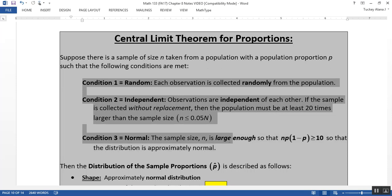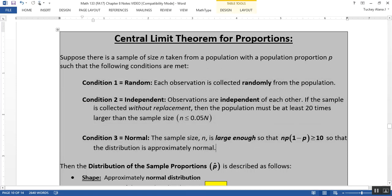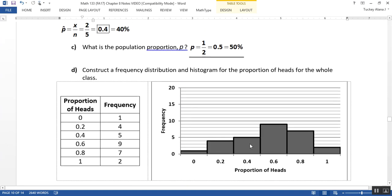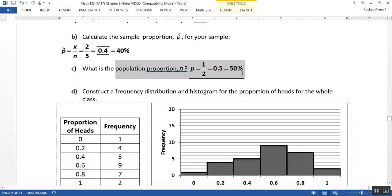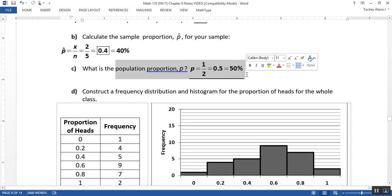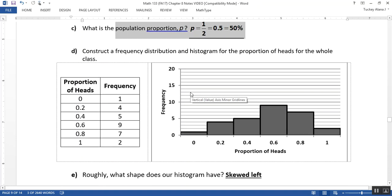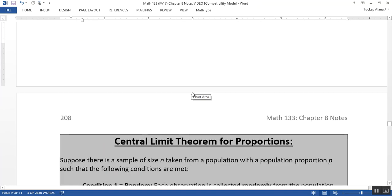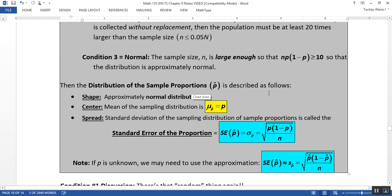But we're going to run amok of the large enough sample, because there's only 28 students in the class, and 28 times p, p is the assumed proportion, or population proportion, which is 0.5, 50-50 chance of heads or tails on that coin. And I don't think that 28 was large enough to overcome that. So let's see if I'm right.